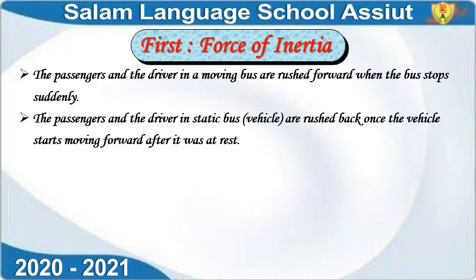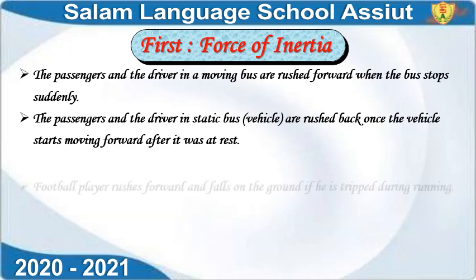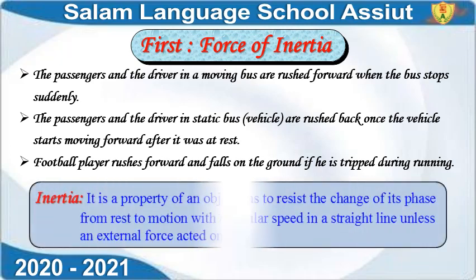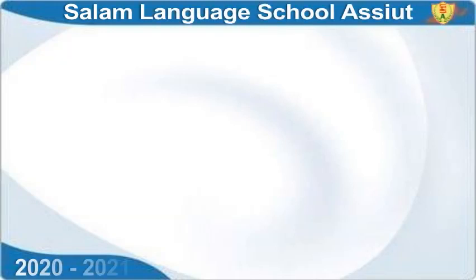Your body is in a state and wants to keep moving. The bus stops but the body refuses to stop — it keeps moving. Football player rushed forward and falls on the ground if he is trapped during running. That's inertia. Inertia is the property of an object to resist change of its state, from rest to motion or at regular speed in a straight line, unless an external force acts on it.